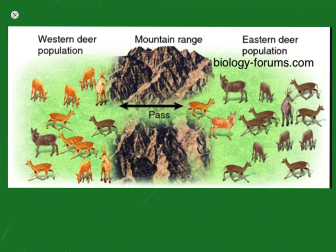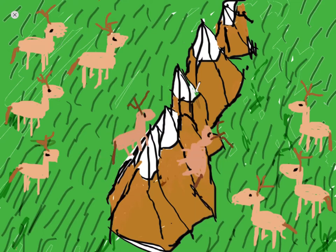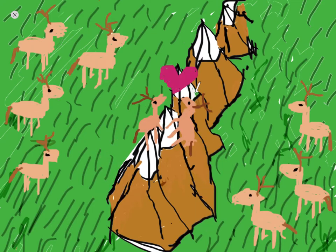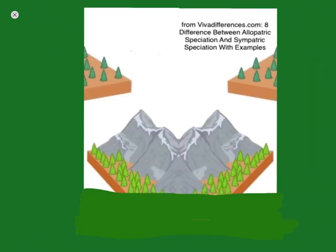Because of this geographic isolation, members of the population breed with each other more than they breed with members of other populations, and gene flow between populations is reduced, but it still exists. Some populations are so separated that gene flow between them is impossible. A population that is distributed over a certain area can become split up into two or more populations if a geographical barrier is formed between them.